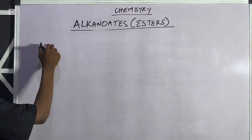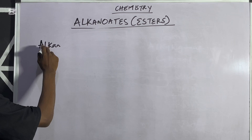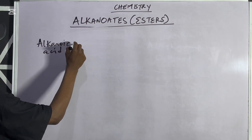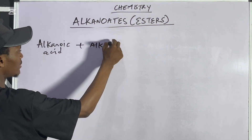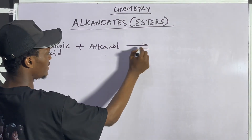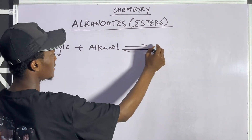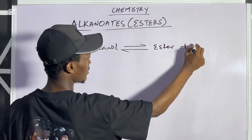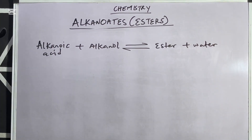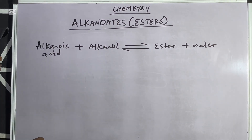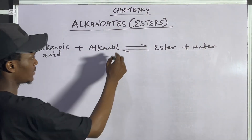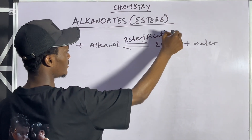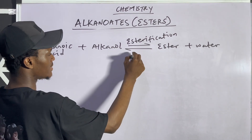So the reaction is: alkanoic acid plus alkanol in a reversible reaction — proceeding in two directions — gives ester plus water. The forward reaction is called esterification, while the backward reaction is called hydrolysis.